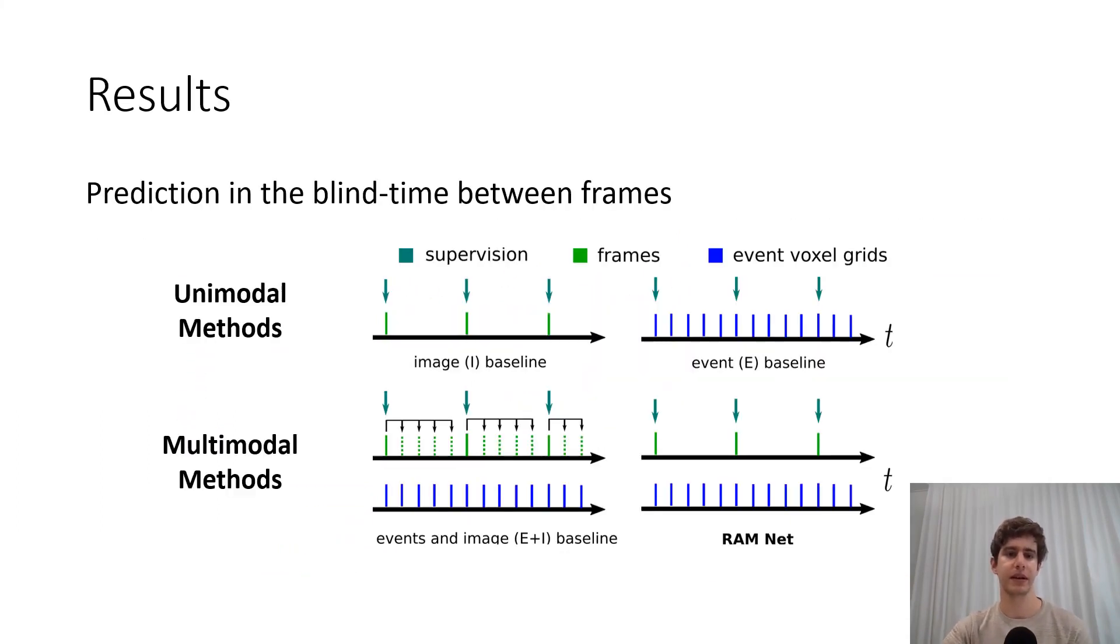We compare our method against multimodal and unimodal recurrent methods when presented with low frame rate input images and high frame rate input event voxel grids. While unimodal methods only process images or events, the multimodal methods combine both by duplicating images in the blind time between frames.